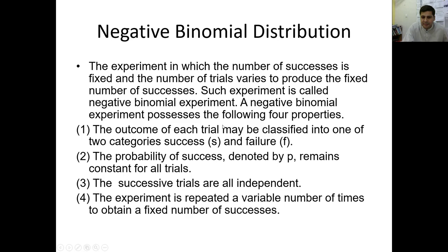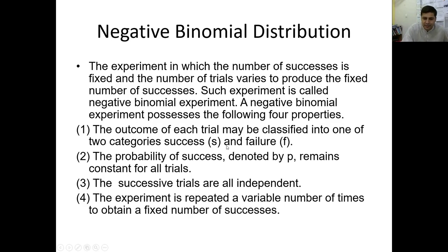A negative binomial experiment possesses the following four properties. The first property: the outcome of each trial may be classified into one of two categories. As mentioned in the binomial distribution, there are only two possible outcomes — it will be a success or a failure, effective or defective, good or bad.